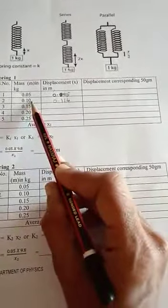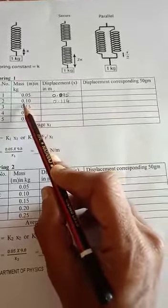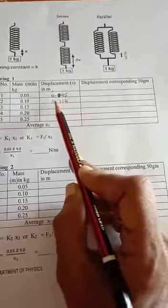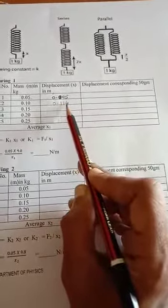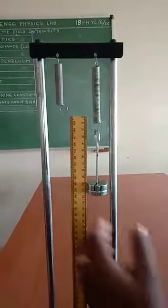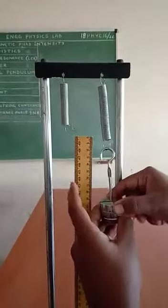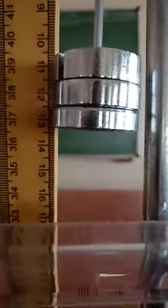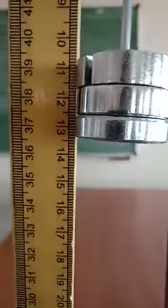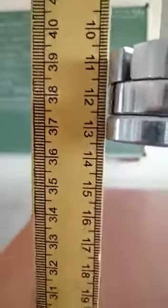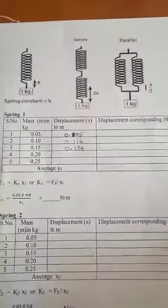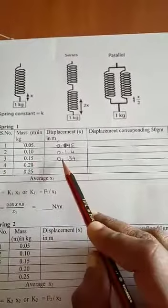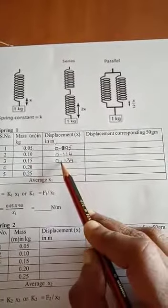For 100 grams, converted to kg it is 0.10, the displacement is 11.4 cm, which converts to 0.114 meters. Add another 50 grams and note down the reading. The value is 13.4. So for 150 grams, the displacement is 13.4 cm, which converts to 0.134 meters.